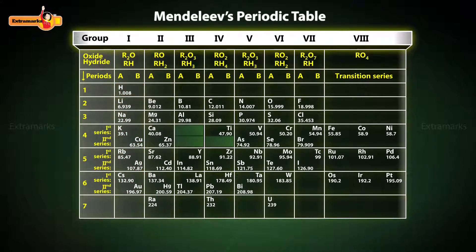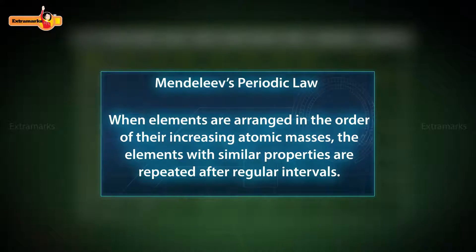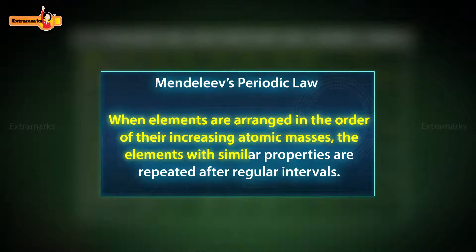On the basis of these similarities, he proposed his periodic law. The law states that when elements are arranged in the order of their increasing atomic masses, the elements with similar properties are repeated after regular intervals.